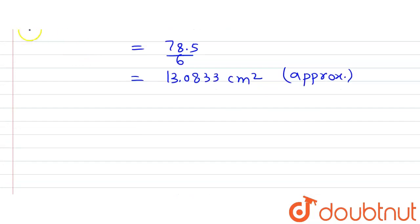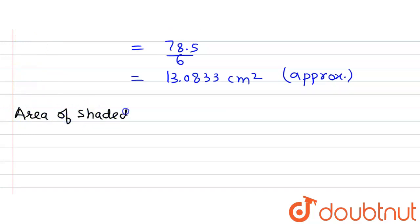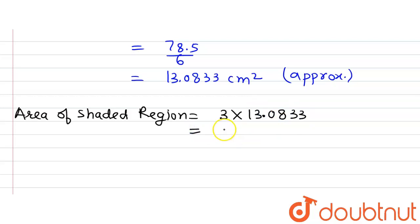Now let's find out the area of the shaded region. As established, the area of the shaded region is 3 times the area of sector BDF, which is 3 multiplied by 13.0833, giving us 39.25 cm². This is an approximate value, and this is the area of the shaded region which we were required to find.